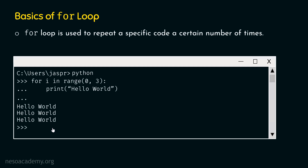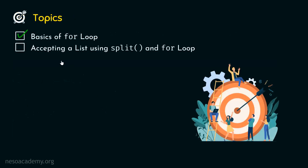The reason we are getting hello world three times is because the range function has returned three values — zero, one, and two — so the for loop runs three times and the print statement is executed three times. This is all we need to understand about for loop for now. Let's move on to the next topic: accepting a list using split and for loop.